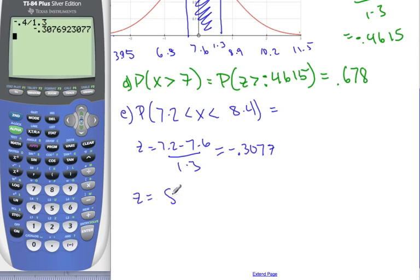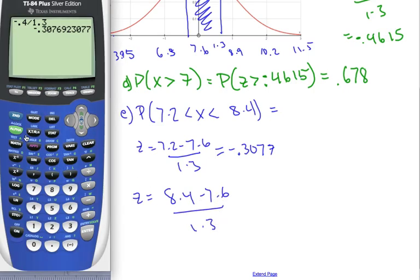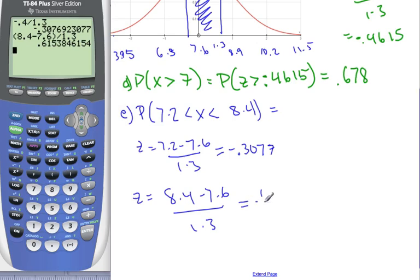The other z is going to be 8.4 minus 7.6 over 1.3. And that's going to be 8.4 minus 7.6. Divide the 1.3. That is equal to 0.6154.